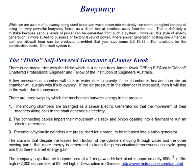However, this style of energy generation is more suited to business or factory levels of power, where power generation costing one American cent per kilowatt hour can be provided, provided that you have some 3.75 million US dollars available for the construction costs. One such system is the Hydro, self-powered generator of James Kwok.